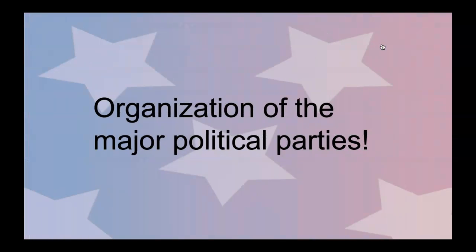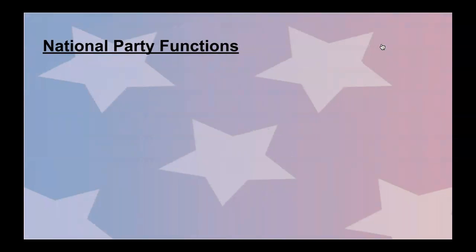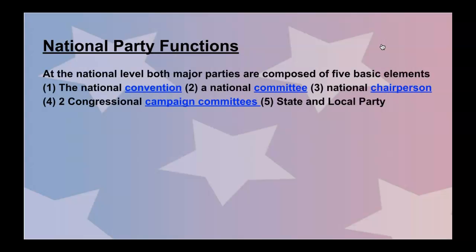Let's look at the deeper organization of political parties. At the national level, both major parties are composed of five basic elements: the national convention, a national committee, a national chairperson, two congressional campaign committees, and state and local parties. Political parties try their best to unify the party at all tiers of government to bring about a common brand, a common message, and a common purpose.